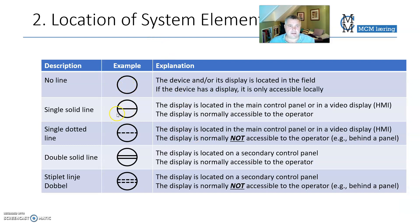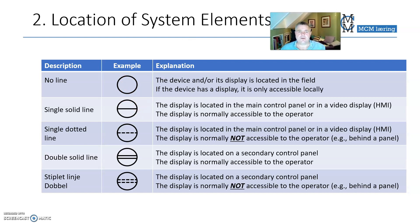The line inside the symbol describes where the system element is located. If it doesn't have a line in it, it's located in the field, so you have to go to the pipe or whatever to find the instrument and access it there. If it has a division line, it means that it's in the main control panel, so you will find it in the control room of a plant.